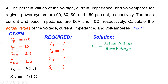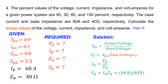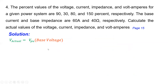Using the per unit equation — actual value equals per unit value multiplied by base value — we first need to find the base voltage. Base voltage equals base current multiplied by base impedance: 60 amperes multiplied by 40 ohms gives 2400 volts. The actual voltage then equals per unit voltage multiplied by base voltage: 0.9 multiplied by 2400 gives 2160 volts.